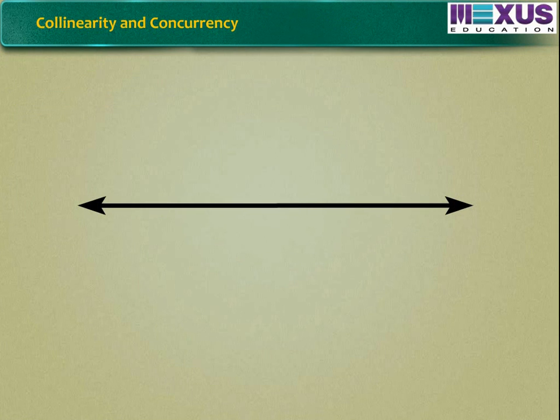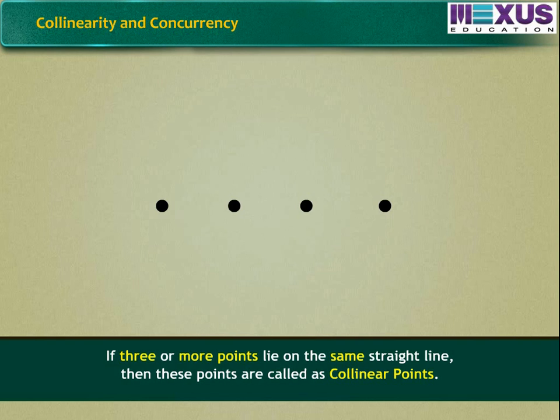Let us learn more about points and lines. If three or more points lie on the same straight line, then these points are called as collinear points.